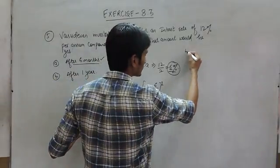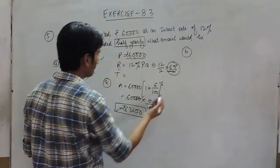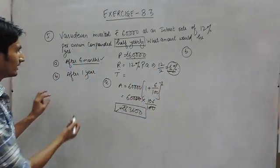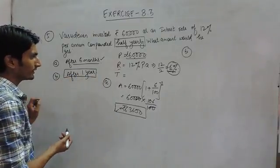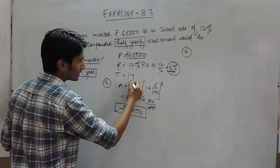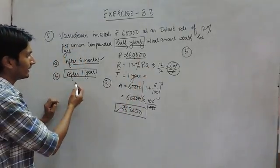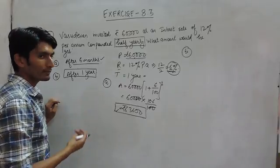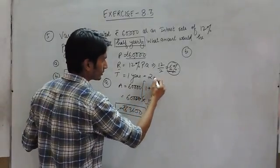In the second case, principal will remain the same, rate again will be half. And if we have to calculate after 1 year, the time is 1 year because interest is payable half yearly. So in 1 year, 2 times your interest will be paid, or you can say the time becomes twice.